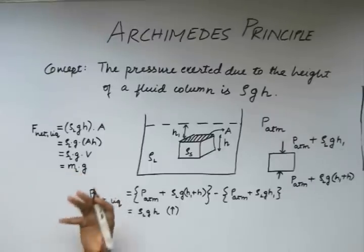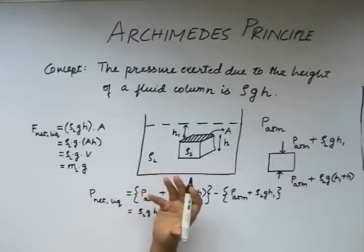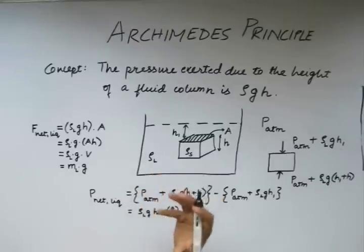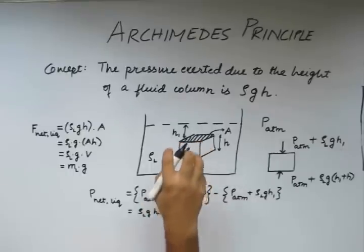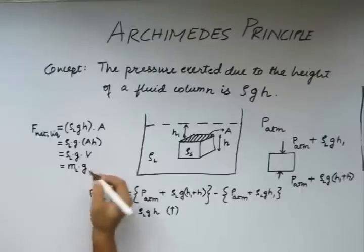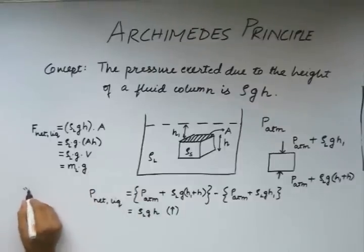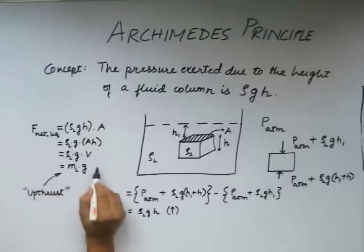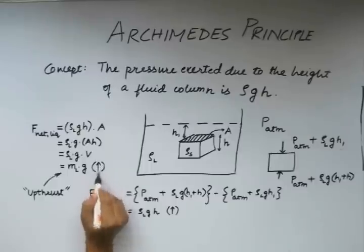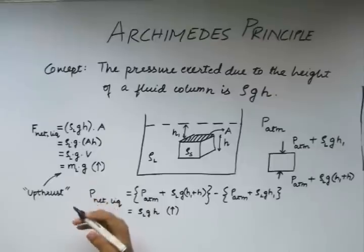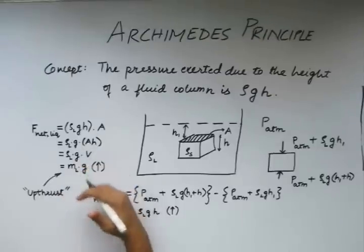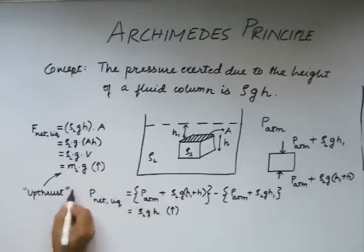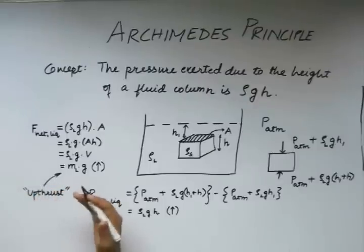This is basically our Archimedes principle, which is the volume or the mass of the liquid displaced by this body is basically the net force or upthrust on this solid body. This force is in the upward direction. You may note that this upthrust force can always be applied in the upward direction. That is why this is called upthrust or thrust in the upward direction.